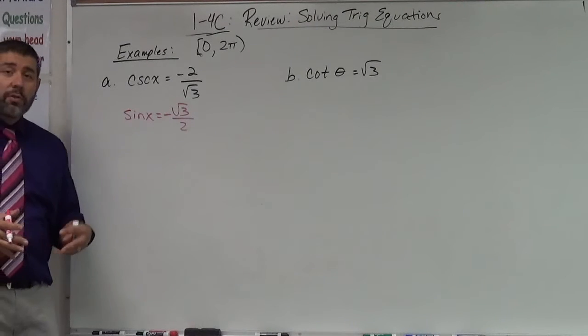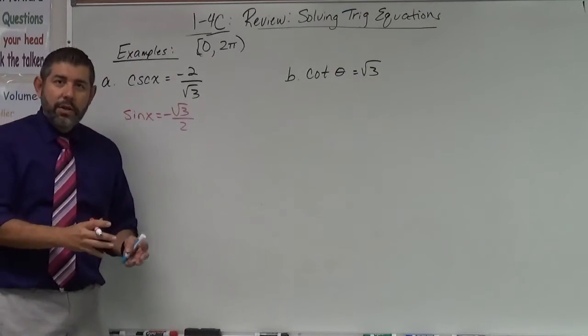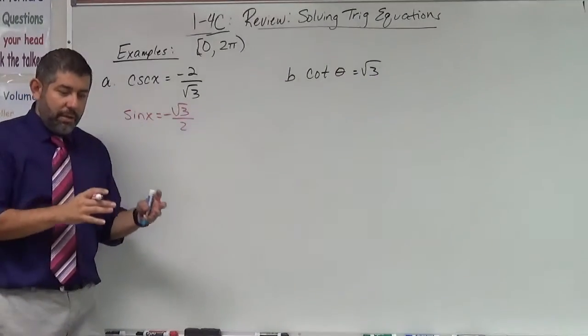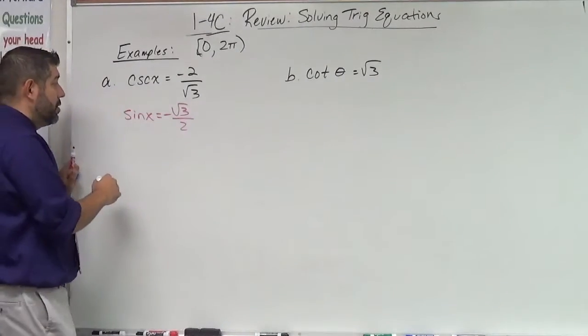So I'm going to use my unit circle to do that. And if you remember, if you don't have a unit circle near you, you really just want to make it for these values. So think about where is the sine of x going to be negative root three over two.